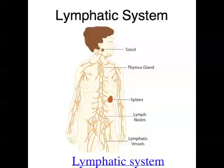Now the last part of the circulatory system in mammals is the lymphatic system. This is an open circulatory system that returns the interstitial fluid back to the closed circulatory system using one-way valves. There is always a lot of fluid in between cells, and that does need to be brought back to the circulatory system, and the lymphatic system does that.